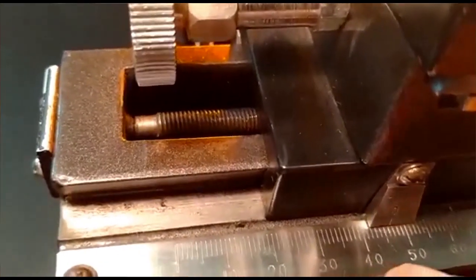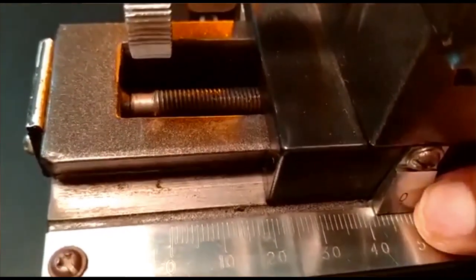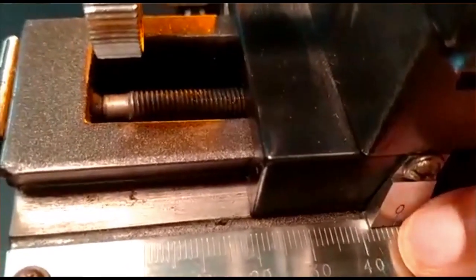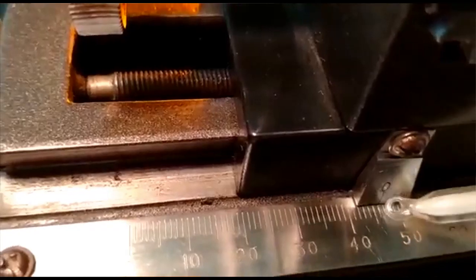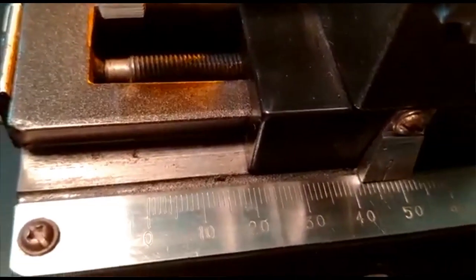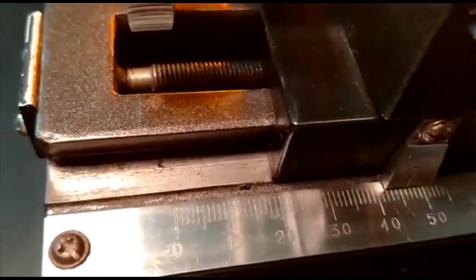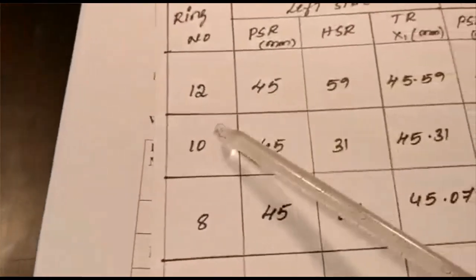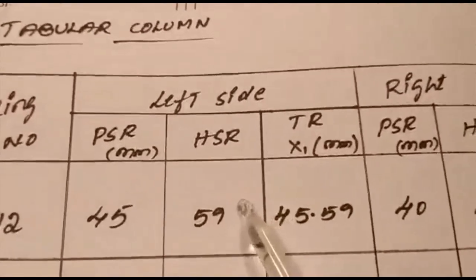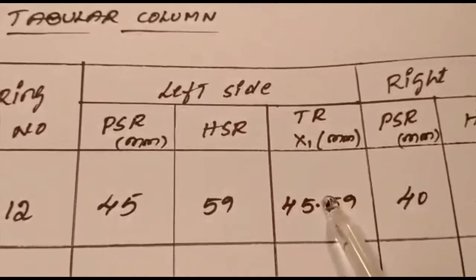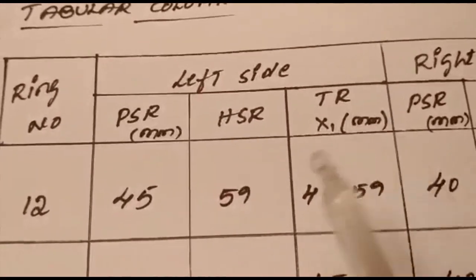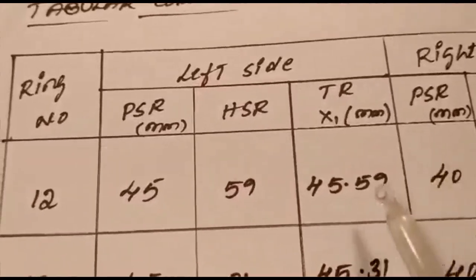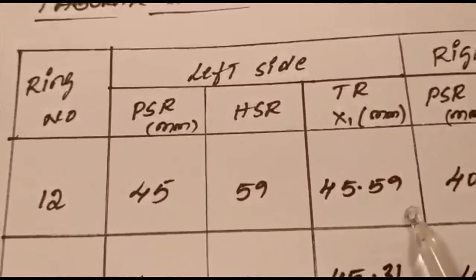From 0, 10, 20, 30 on the pitch scale, the line that exactly coincides gives your pitch scale reading — that is 45. Similarly, you observe the head scale value, which we get as 59. Substituting both values in the tabular column for ring number 12: pitch scale is 45 and head scale is 59. Applying the formula TR = PSR + (HSR × LC), we get a total reading of 45.59.